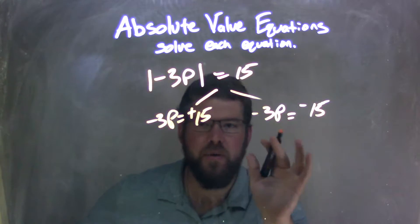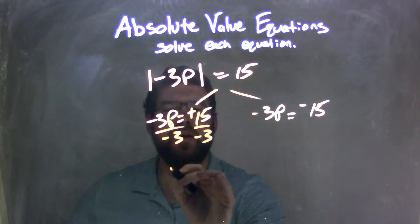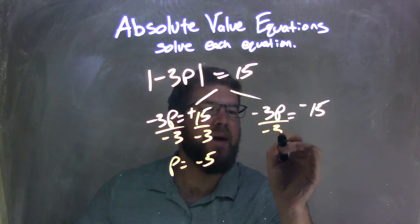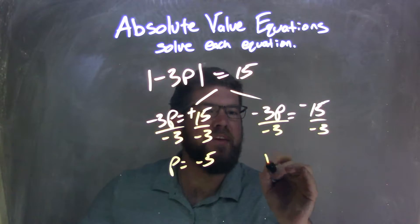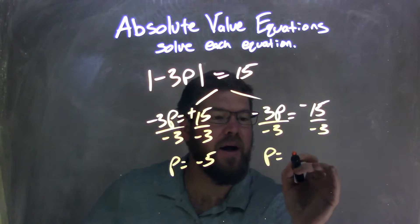I then solve each equation individually. I divide by negative 3 to both sides. p equals 15 divided by negative 3, which is negative 5. I divide this side by negative 3 as well, leaving me with p equals negative 15 divided by negative 3 is a positive 5.